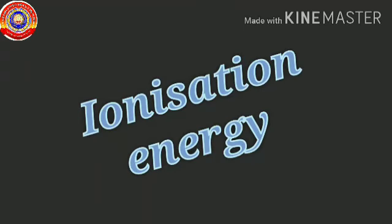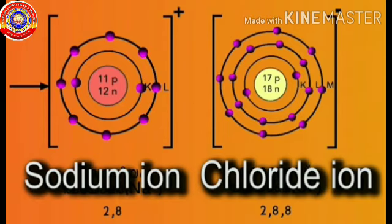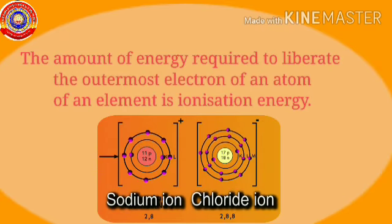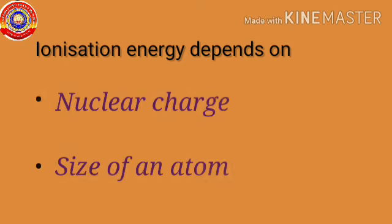Shall we learn how ionization energy varies in the periodic table? You have understood how sodium chloride is formed by combining sodium and chlorine atoms. Sodium loses an electron and chlorine gains an electron — the atoms become charged when there is a transfer of electrons. The energy needed to liberate electrons from the atoms is called ionization energy — specifically, the amount of energy required to liberate the outermost electron of an atom. Ionization energy depends on two important factors: nuclear charge and size of an atom.